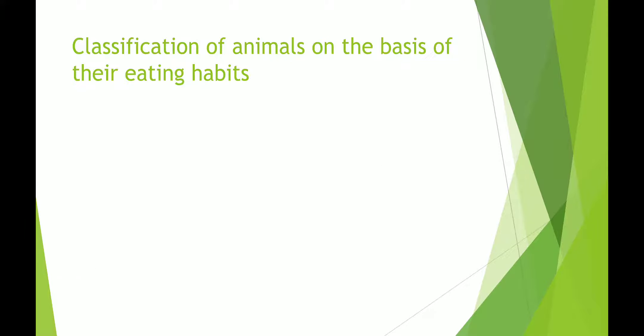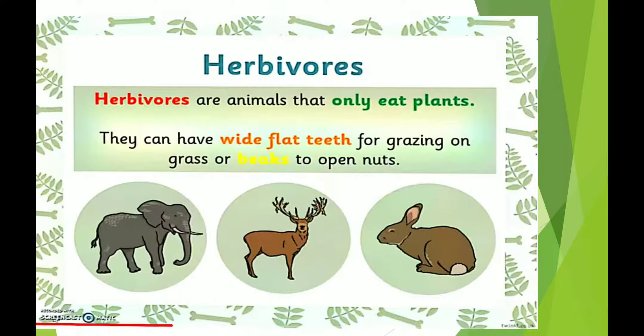Let's classify animals on the basis of their eating habits. Animals are classified as herbivorous, carnivorous, and omnivorous. Herbivorous are animals that eat only plants. They have wide flat teeth for grazing on grass, or beaks in the case of birds to open nuts. Examples include elephant, deer, rabbit, cow, goat, and buffalo — all are herbivorous.